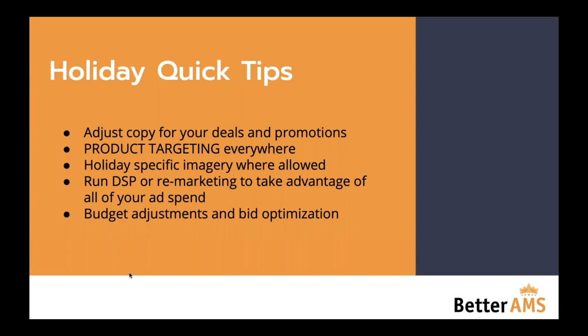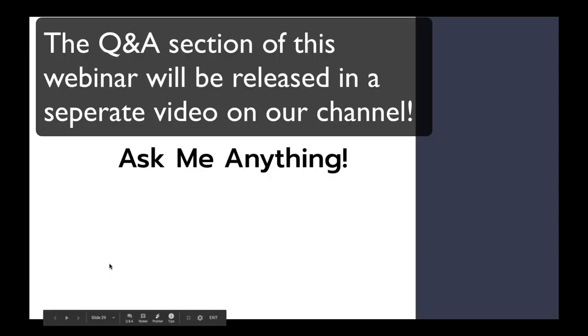The last big one — which will probably come up in the question section — is budget adjustments and bid optimization. I typically do not recommend making crazy bid optimizations as we head into Black Friday and Cyber Monday. Don't cut bids — don't get really crazy with bidding unless it's for a specific strategy like winning number one 100% of the time. Do make budget adjustments though — increase your budgets on everything performing well, even things that aren't performing that well if they're important like your ranking campaign. Those are the biggest holiday quick tips and I'm done seven minutes early for our first section, so put questions in the chat.